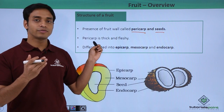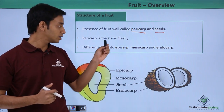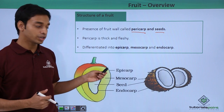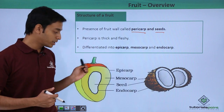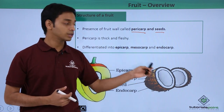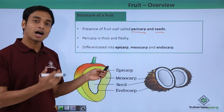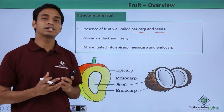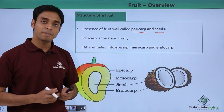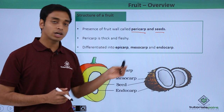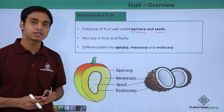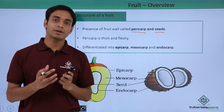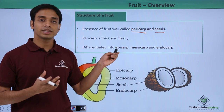The three distinct layers of the pericarp are: the epicarp, which is the outermost layer; the mesocarp, which is the middle layer that mostly turns fleshy and pulpy; and the endocarp, which is the innermost layer inside which the seed is present. As you can see here, this is a typical structure of a mango and a coconut. In mango, the pericarp develops into a fleshy and pulpy substance, giving the mango its pulp.